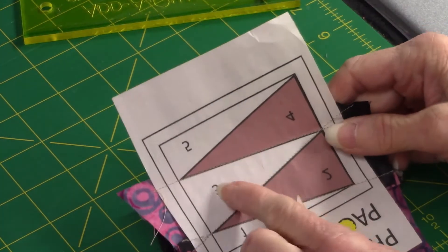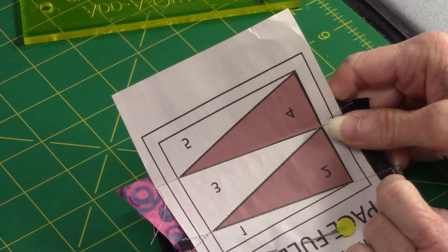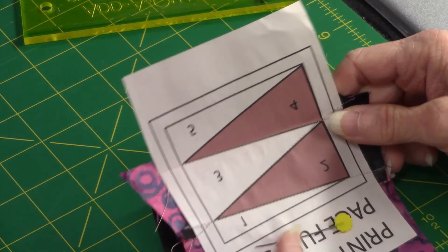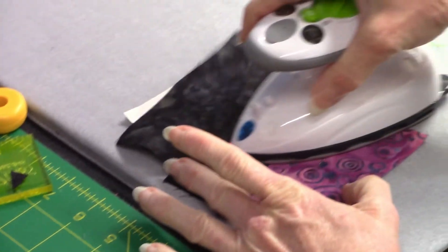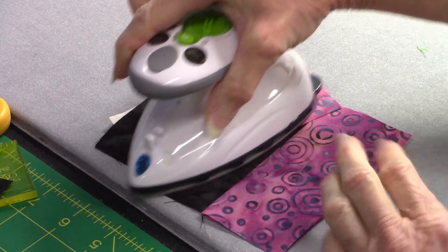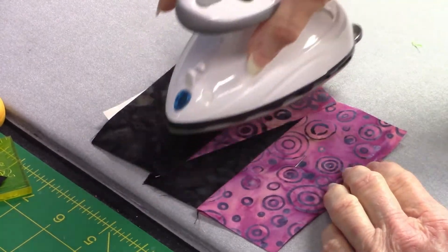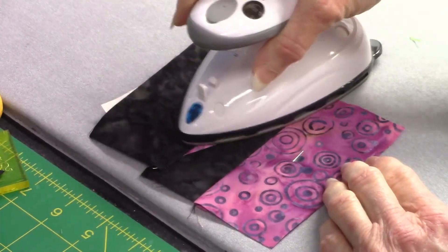Okay, so now you can see I've stitched between three and four using my tight stitch length, and I'm going to take it here and press the black back. Don't iron it like this because that will stretch it, just press up and down.